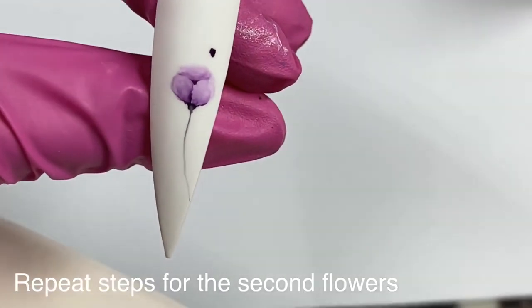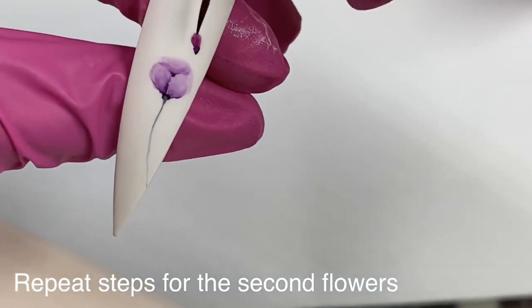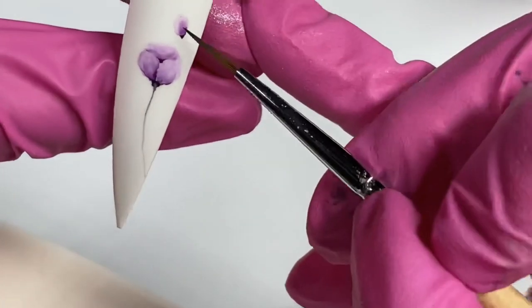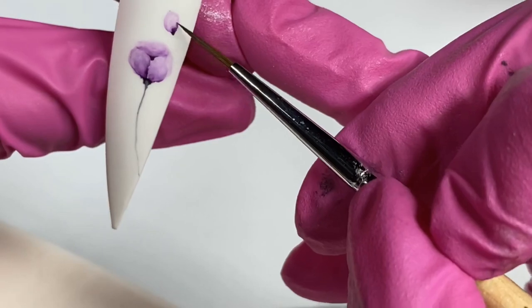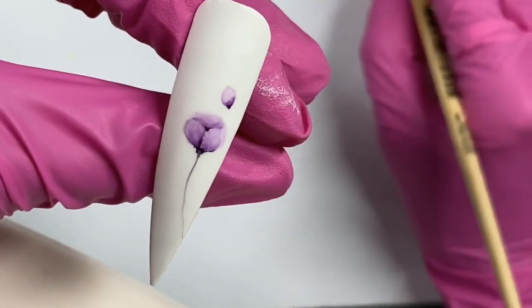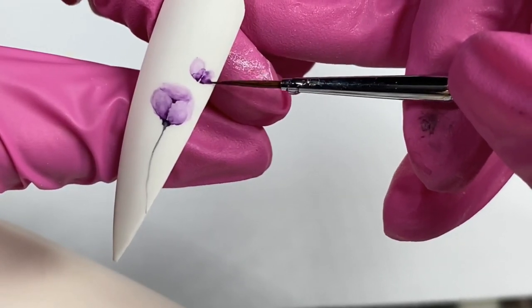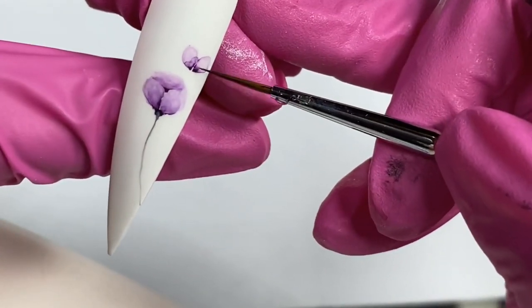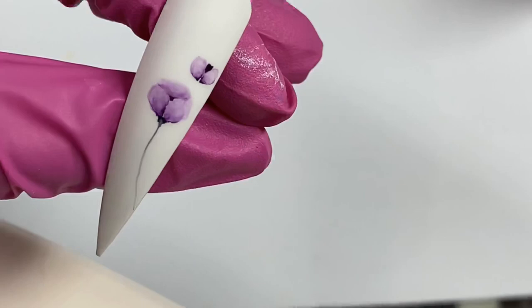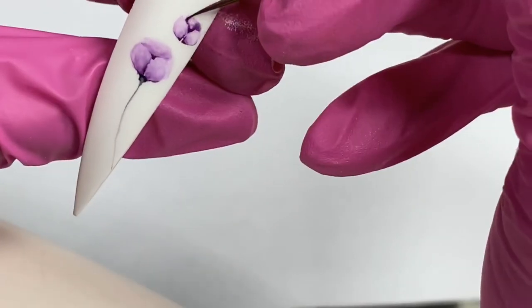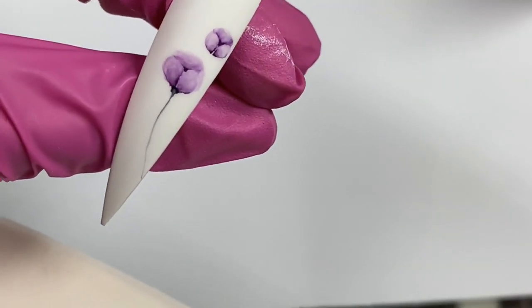And then I'll start with the next flower on top of that so it will be a little bit smaller. Exactly the same as we did on the first flower. Make sure you blend them well for a 3D ombre effect.